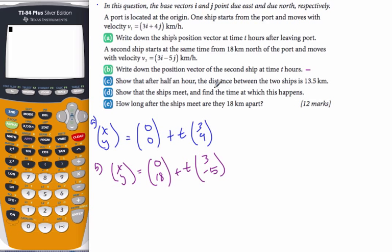Now, show that after half an hour, the distance between the two ships is this. Well, after half an hour means that T is equal to 0.5. So I'm going to take T equal to 0.5, and plug it into both vectors. So I get XY equals 0, 0, plus 0.5, 3, 4, which will be 1.5 and 2. That's the position of the boat at a half hour afterwards.